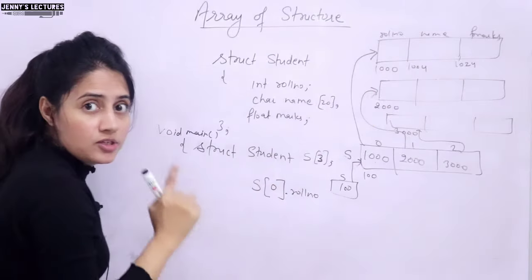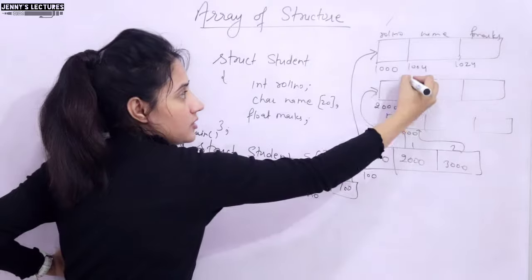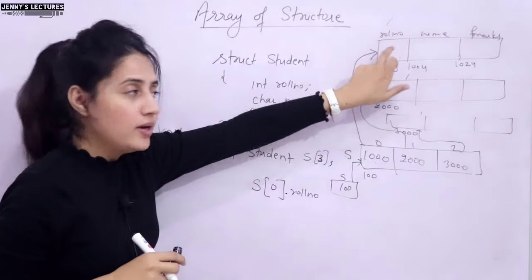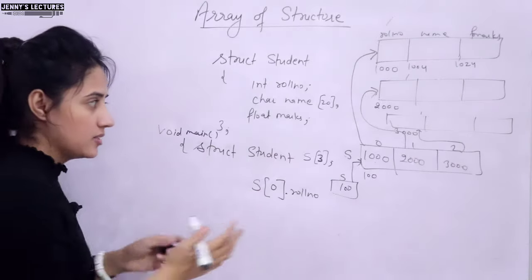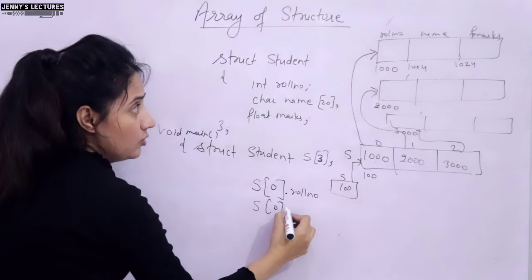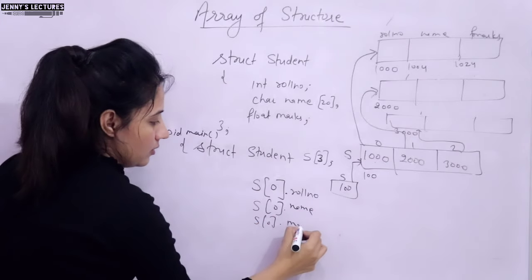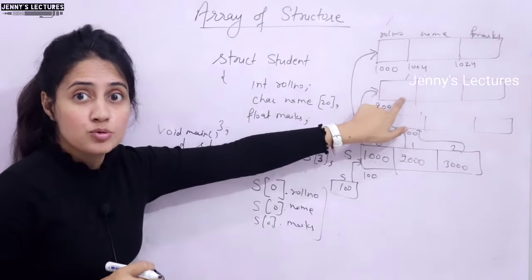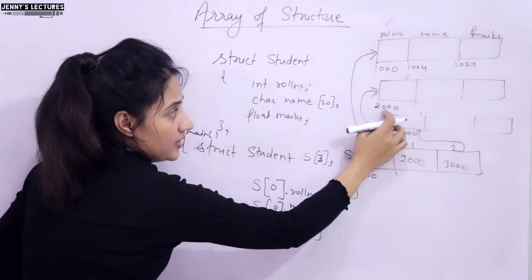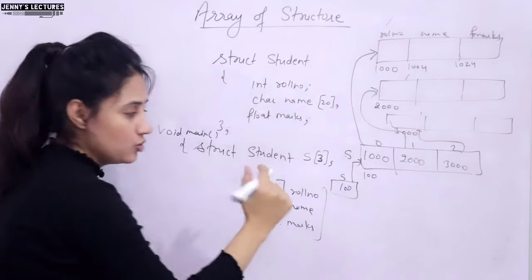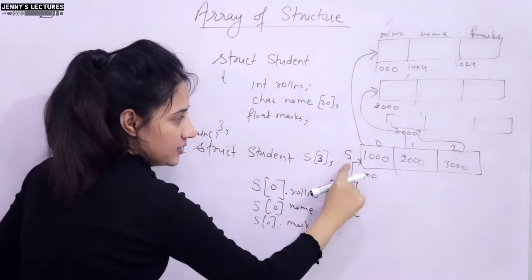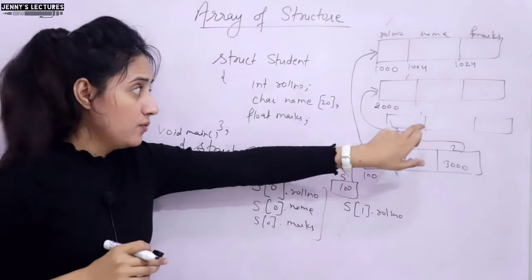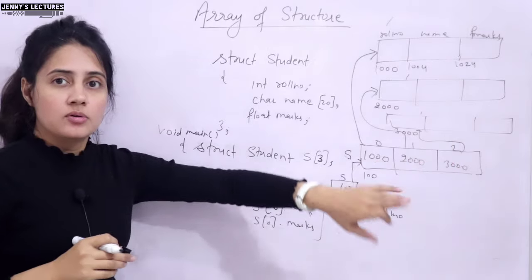For student 1 you can access s[0].name and s[0].marks. For student 2, whose base address is 2000 and array index is 1, you write s[1].rollnumber, s[1].name, s[1].marks. Similarly for student 3: s[2].rollnumber, s[2].name, and s[2].marks.